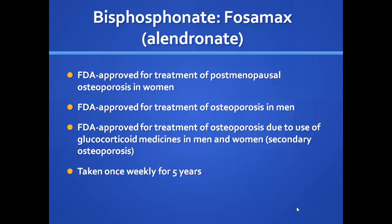The most commonly used bisphosphonate is Fosamax — generic name alendronate. It's approved for postmenopausal osteoporosis, osteoporosis in men, and steroid-induced osteoporosis. It's taken once a week, and we typically use it for five years. There are specific administration requirements and some contraindications we'll discuss.